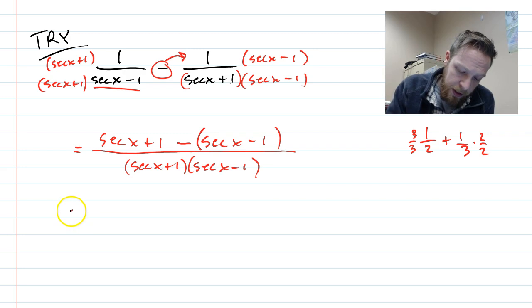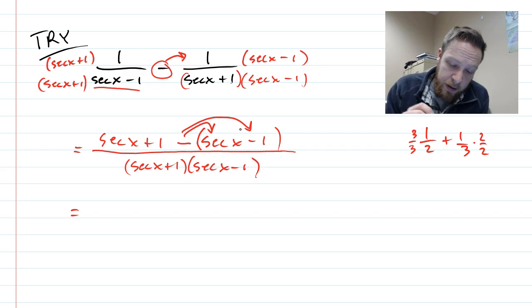Okay, and so after that, what I notice is if I drop this in, I would get a negative secant, and we have a secant on top, positive already. So those cancel,